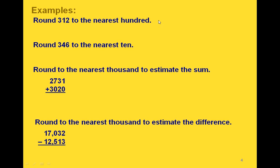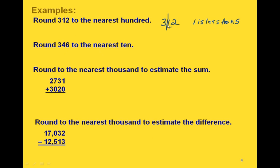Here's another example. If we round 312 to the nearest hundred, here's the hundreds place, so we draw the line to the right of it. The first digit to the right of that line is 1. Since 1 is less than 5, we leave the 3 alone and replace the remaining two digits with zeros. So we end up with 300 as our rounded answer.